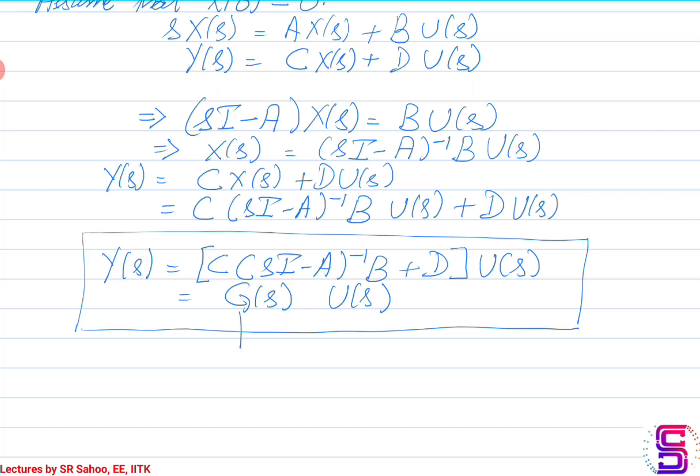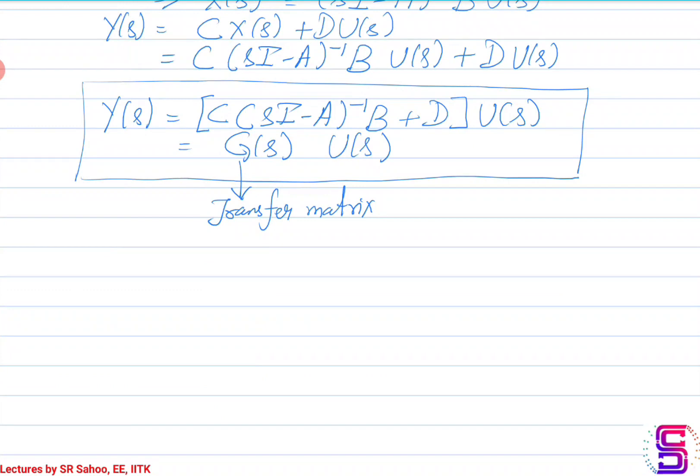So G(s) is the transfer matrix. If y is 1x1 and u is 1x1, that is we are talking of a single input single output system, then G(s) we get is the transfer function, and in such a case this will be equal to y(s) by u(s).